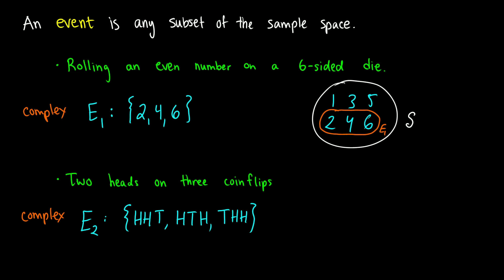But what if our event E3 was to simply roll a one, or in another case, three heads on three coin flips? If we wanted three heads, we would get just one possible outcome: head, head, head. When this is the case, we call it a simple event — just one outcome.